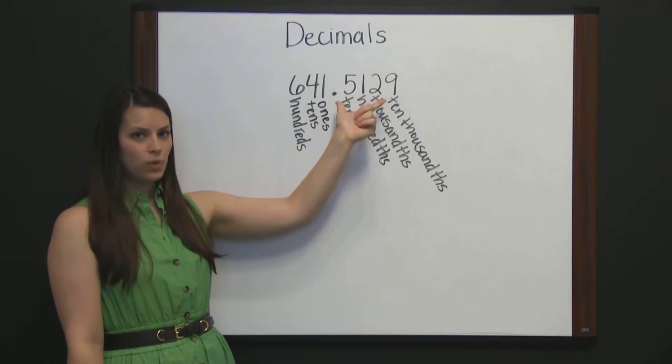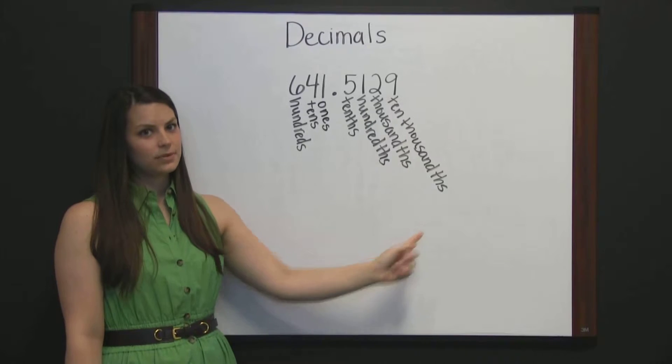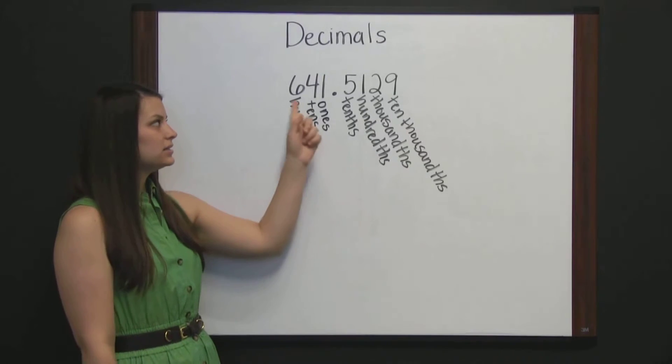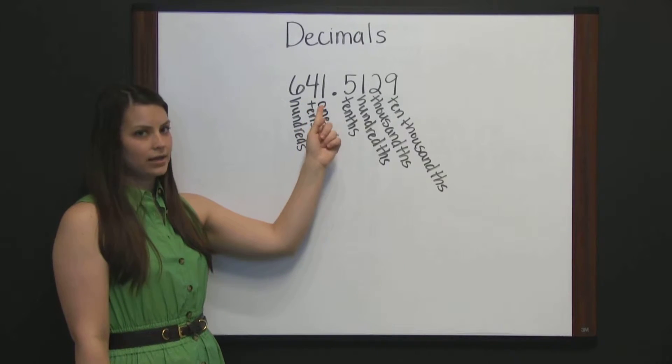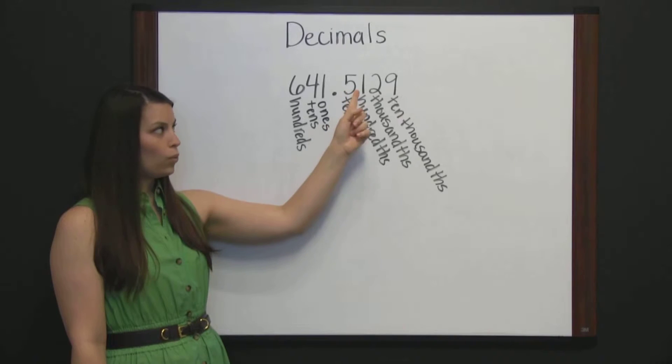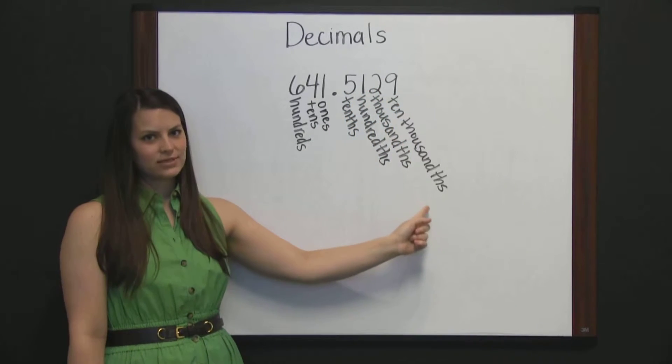then read the number to the right of the decimal, followed by the last place value. So this number would be read as 641 and 5129 ten thousandths.